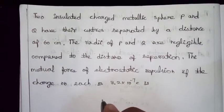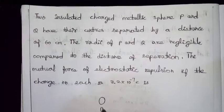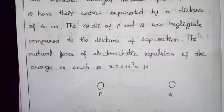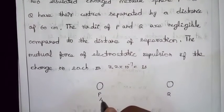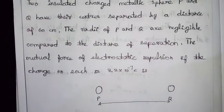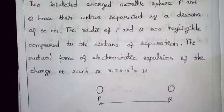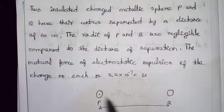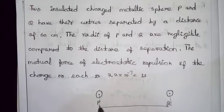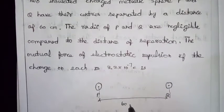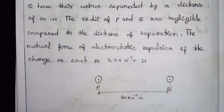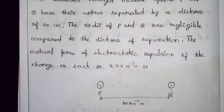These are the two metallic spheres, this is P and Q. They are separated by a distance of 60 cm. This is the distance from there. 60 into 10 power minus 2 meter, nothing but 60 cm.